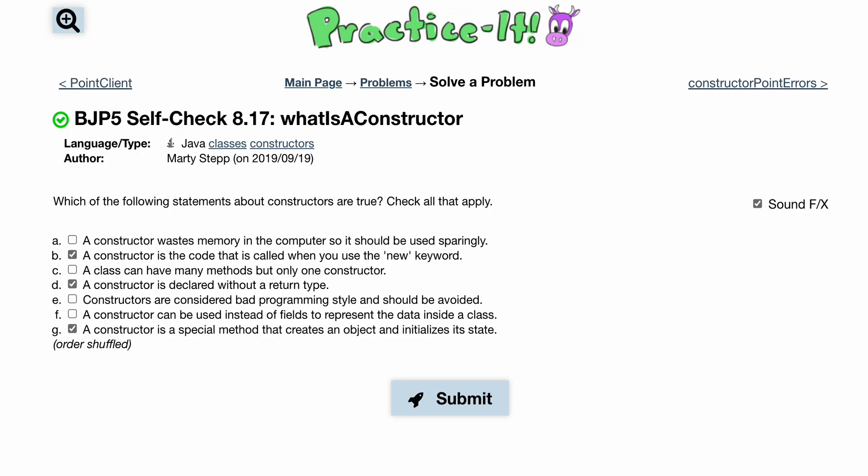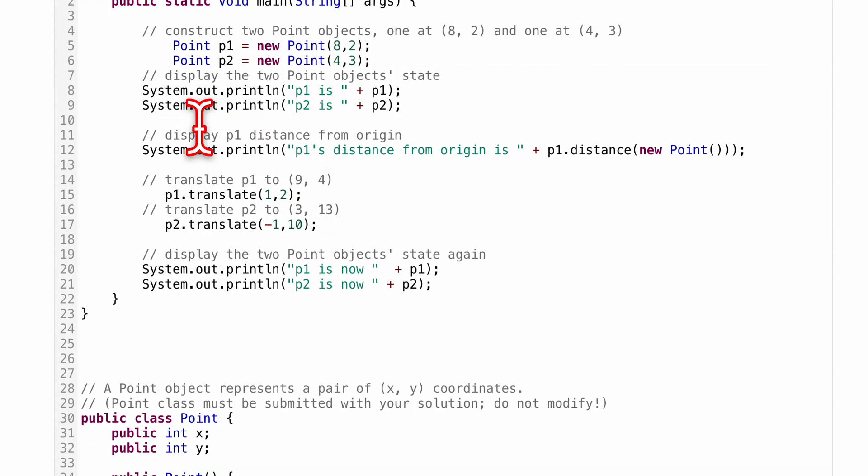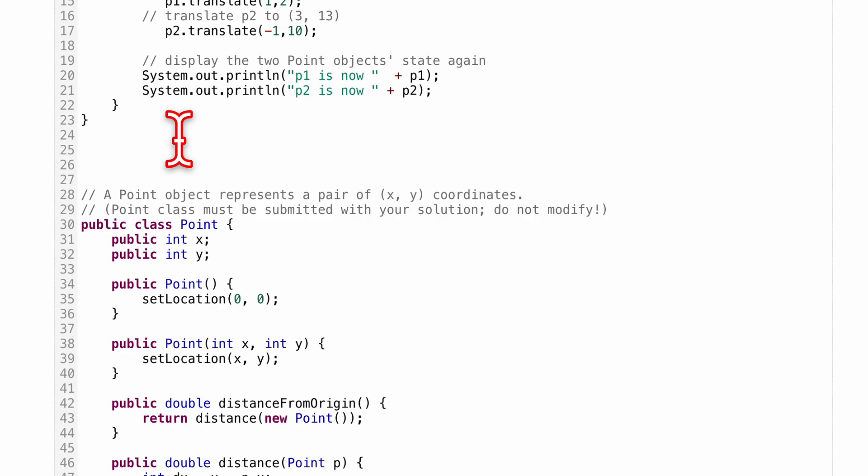Let's do self-check 8.17: what is a constructor? Well, if we look back at a previous problem we did with our 8.16 point client, we have this public class point client.